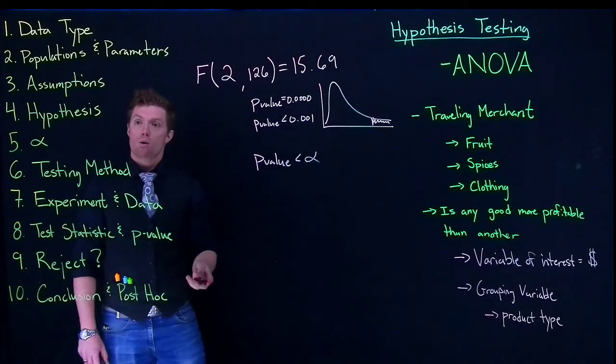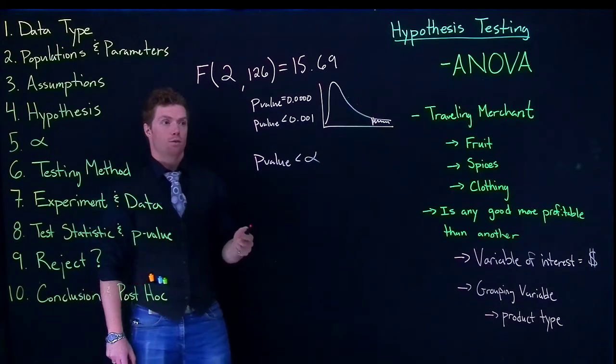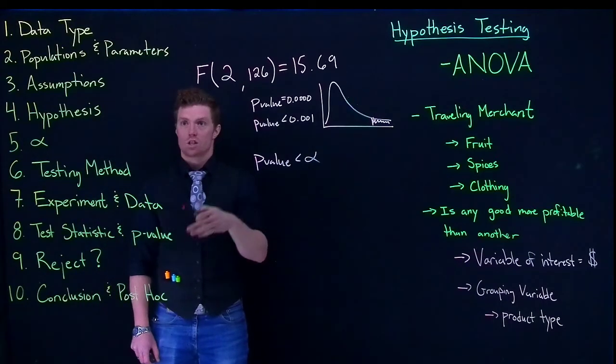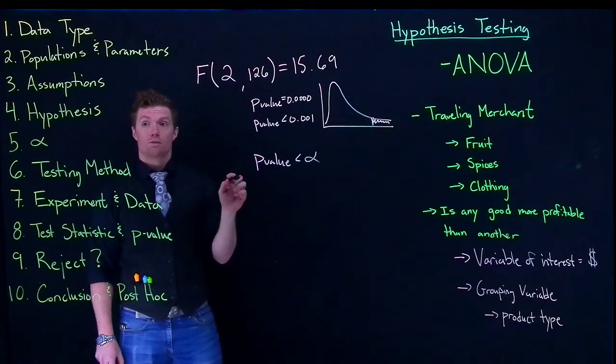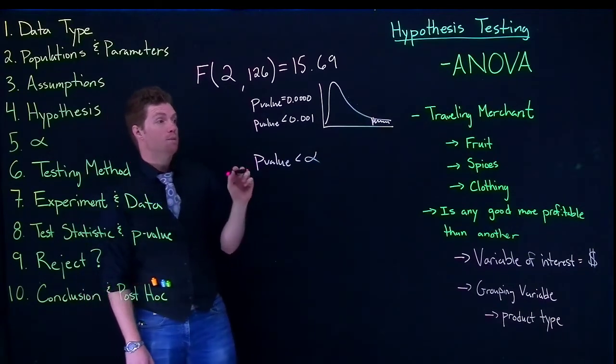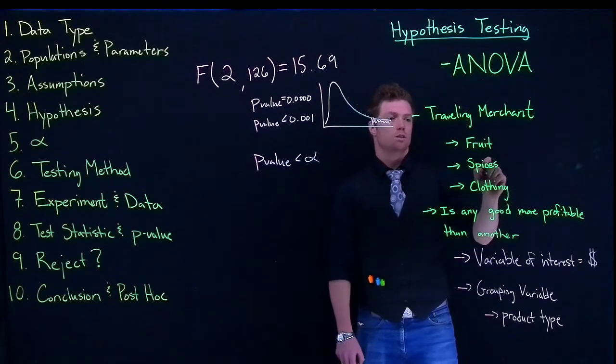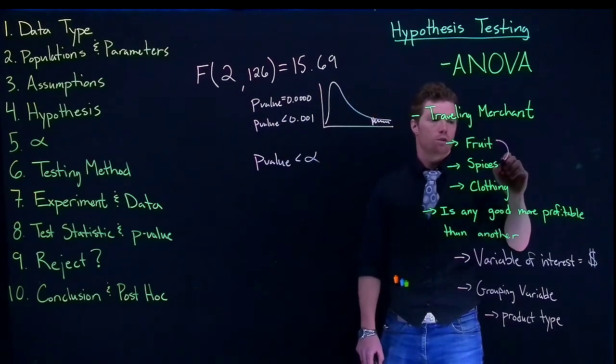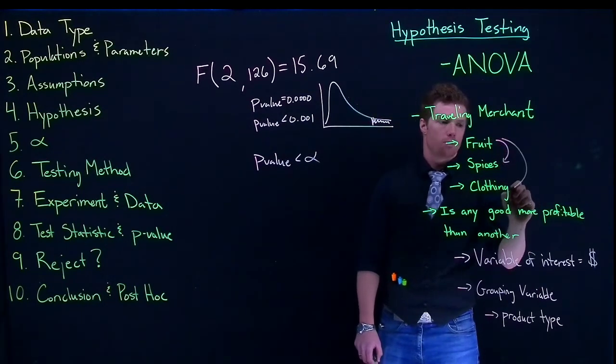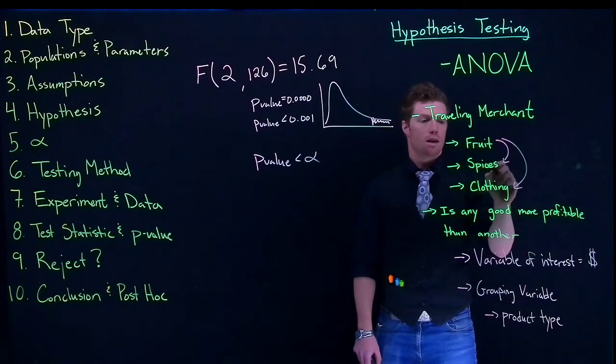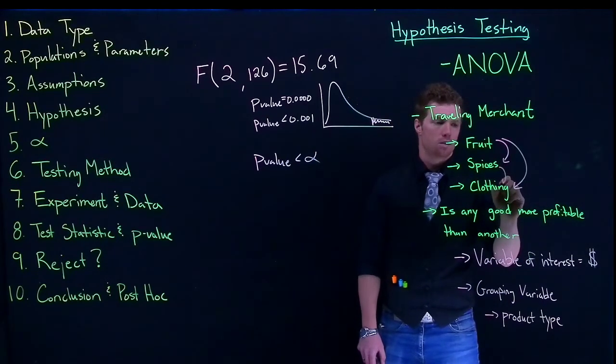But then we also have to do a post hoc if we have significant results. And we've done that before with just confidence intervals. But now our confidence intervals are more complicated because we are now doing a pairwise comparison which means we're going to compare fruit to spices and fruit to clothing and spices to clothing.